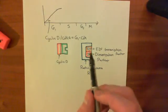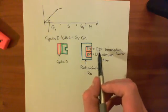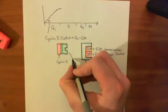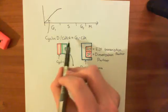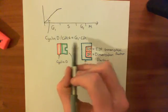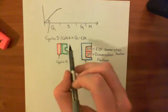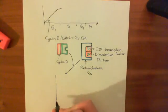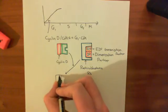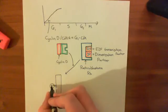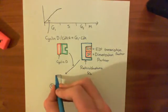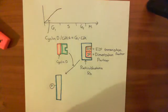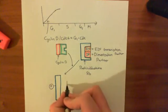In order to move from G1 to S phase, you need to release this E2F-DP complex. What happens is that cyclin D CDK4 complexes — the G1 CDK — can phosphorylate the retinoblastoma protein, changing its conformation. When the retinoblastoma protein changes conformation, it releases these E2F transcription factors with their dimerization partner.